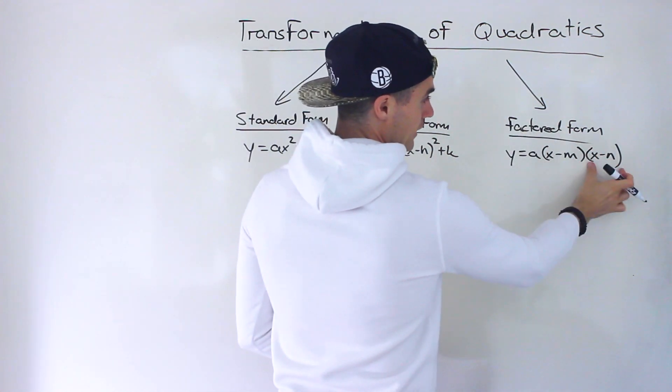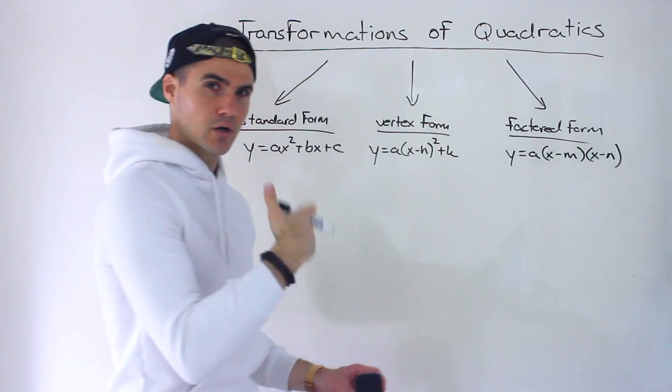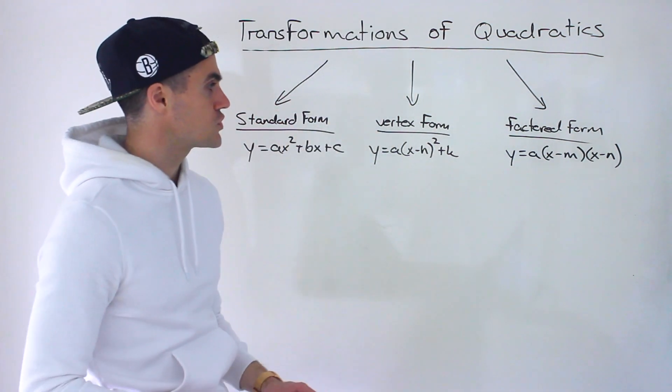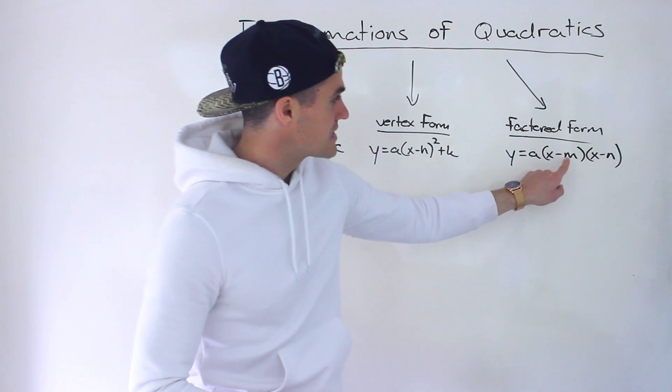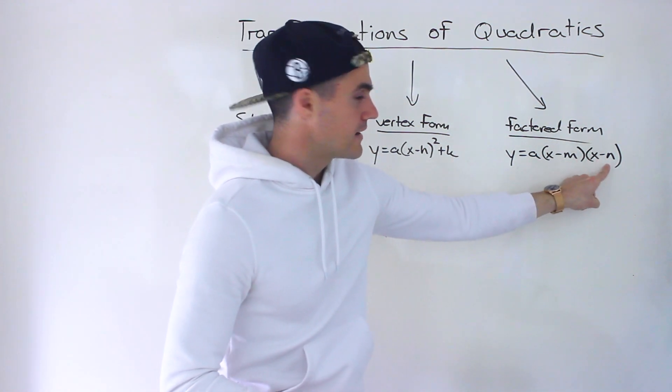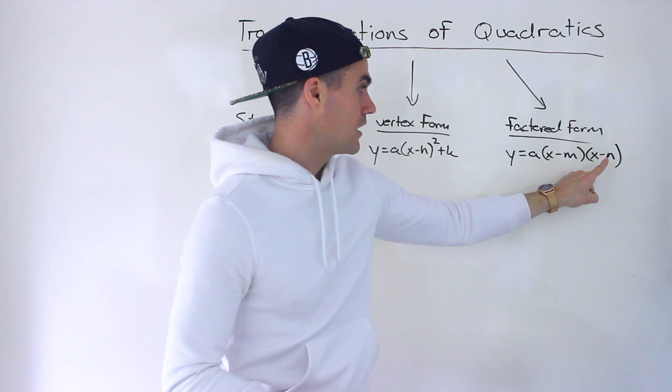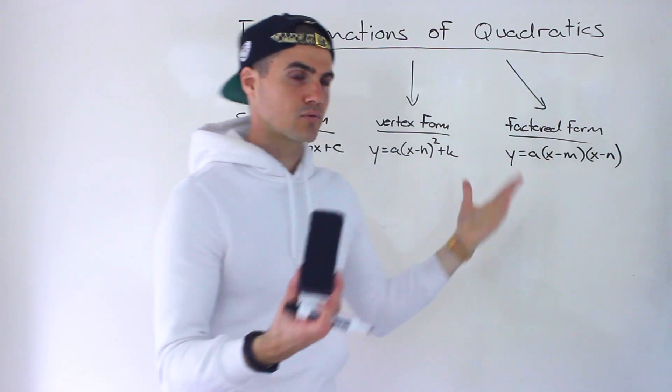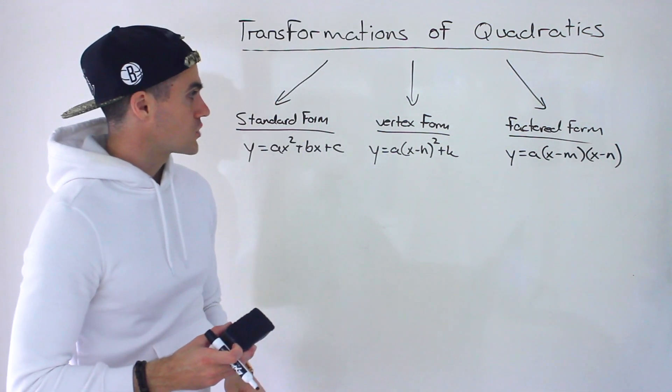So these are the factors here of a quadratic, and we're going to go over factored form in a future section. Sometimes instead of m and n here, you'll see r and s used. Some textbooks use those letters, but it doesn't really matter. It's really arbitrary.